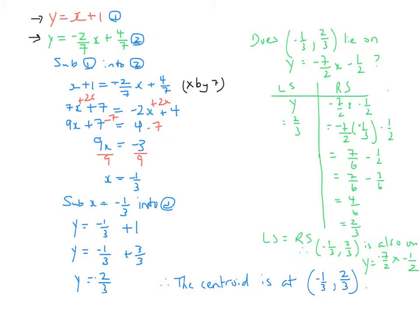I put equation one into equation number two and got that x equals negative one-third. Notice up here when I had the fractions, one of our rules is that when you have fractions in your equations, if you multiply every term by the common denominator, which in this case is seven, you can eliminate the fractions. That's how this line came about, and I solved to get x equals negative one-third.